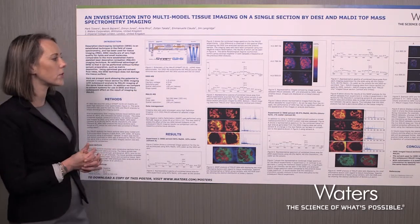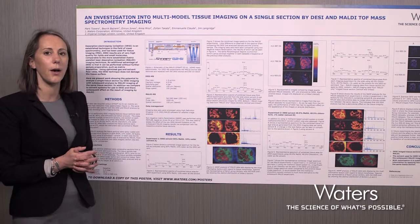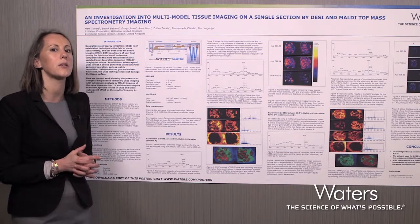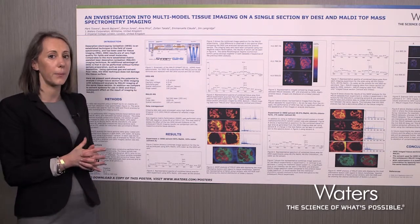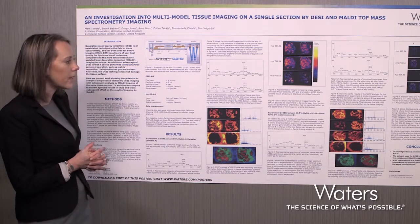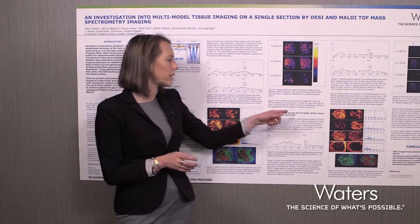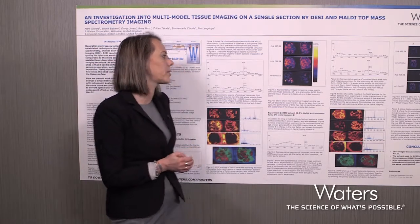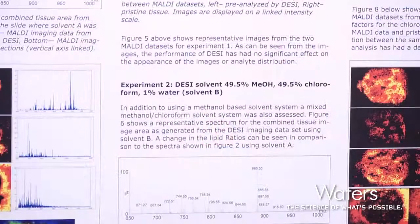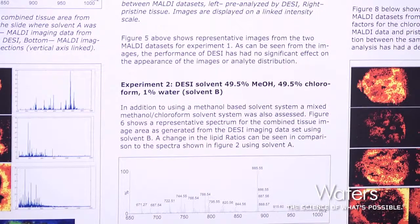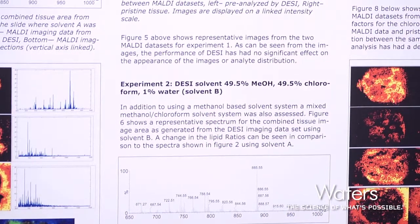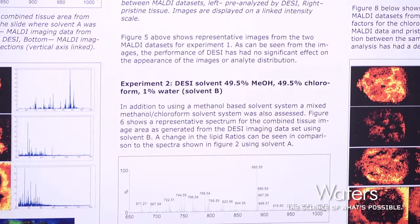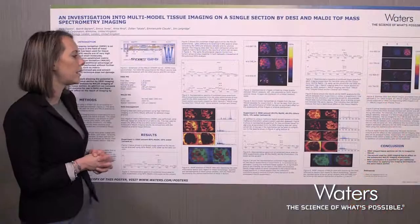We wanted to use a different electrospray solvent to get a better signal-to-noise ratio for lipids. In this case we used 49.5% methanol, 49.5% chloroform, and 1% water. Because of the chloroform, the signal intensity for lipids is much more intense.